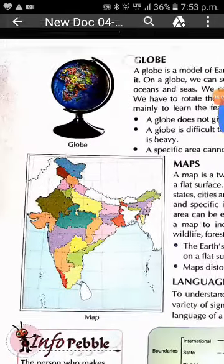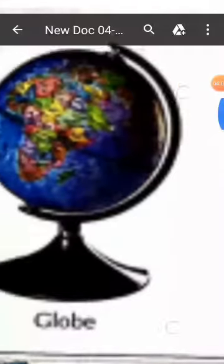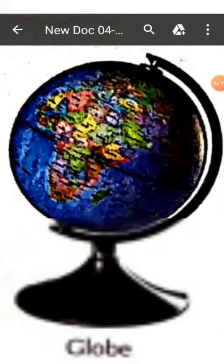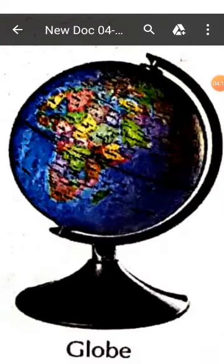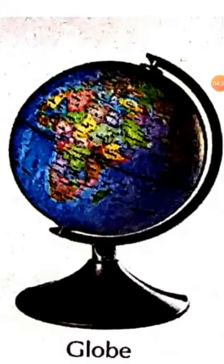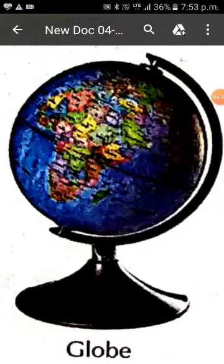Now let us see a globe. This is a globe — an exact model of the earth. It is spherical in shape, just showing the exact shape of the earth. At one time, we can see only the half part of this globe. When we want to see the other half, we have to rotate it. Two points are given here — this is the axis of the earth on which the earth rotates.